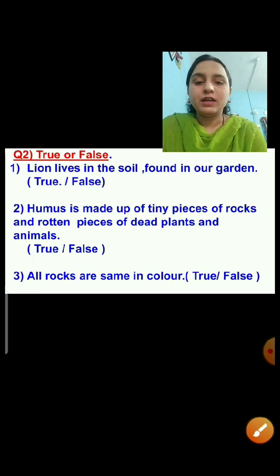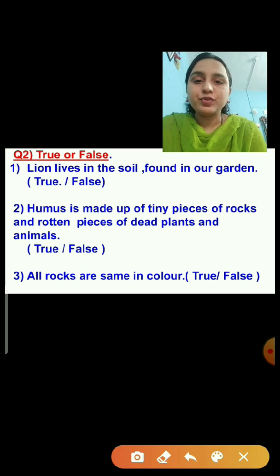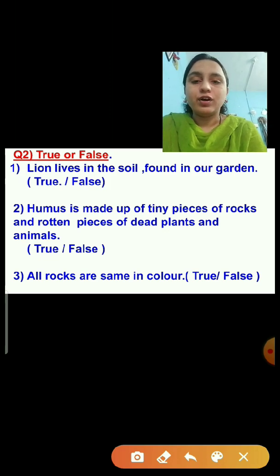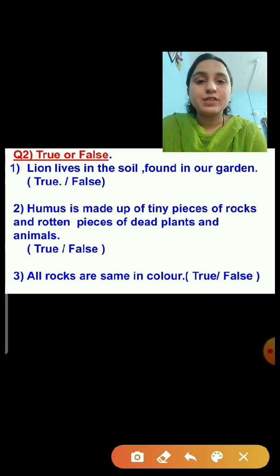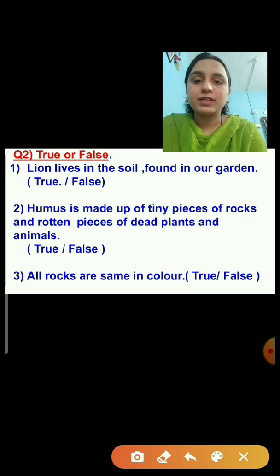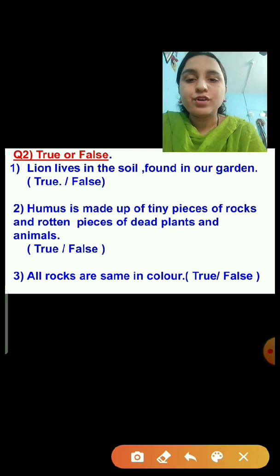Question number two: True or False. Here you have to find whether this statement is true or false and click on the correct option. Question number one: Lion lives in the soil found in our garden. This statement is false — lion lives in a den or cave. So we will choose the option false.